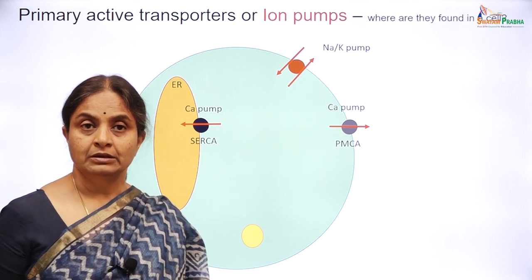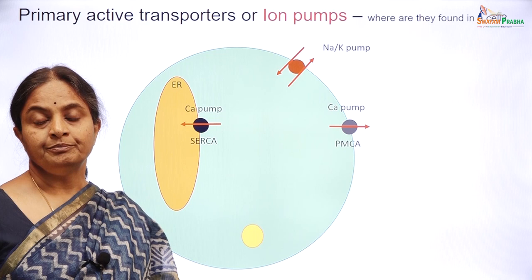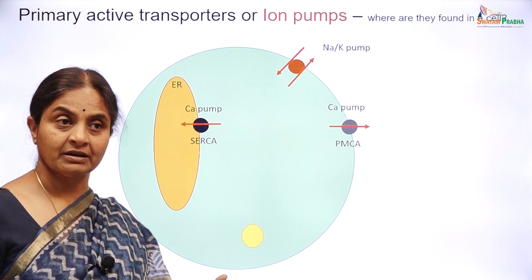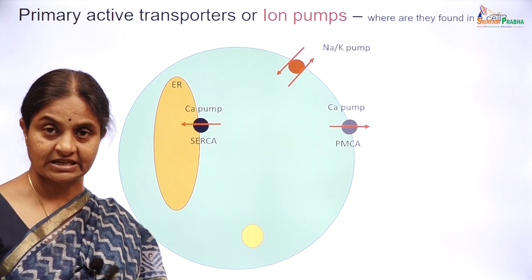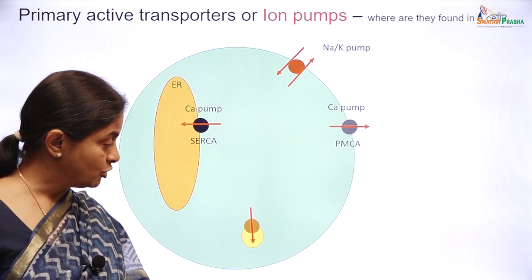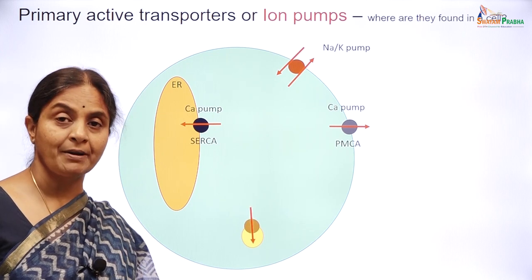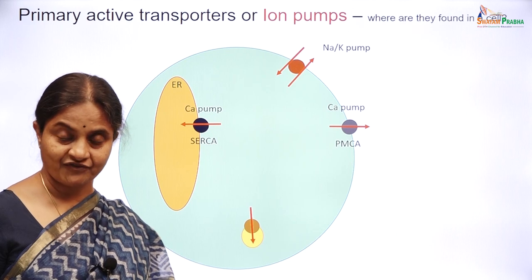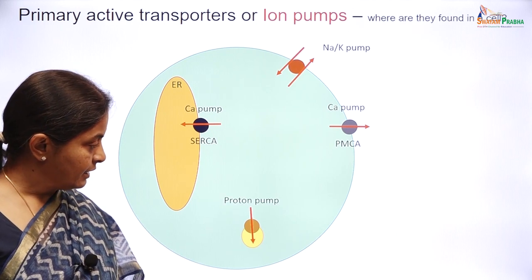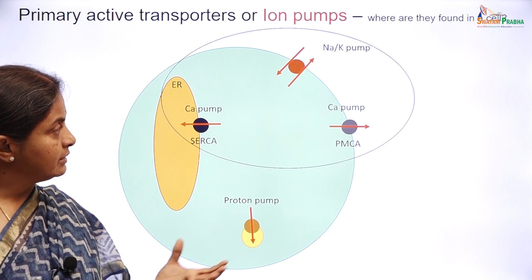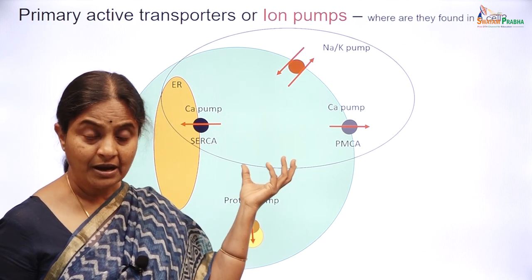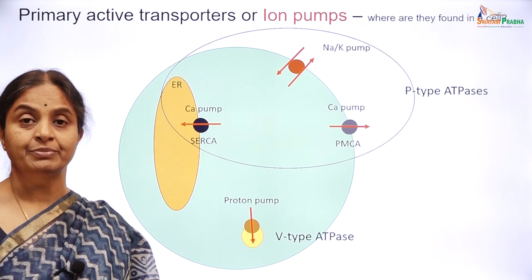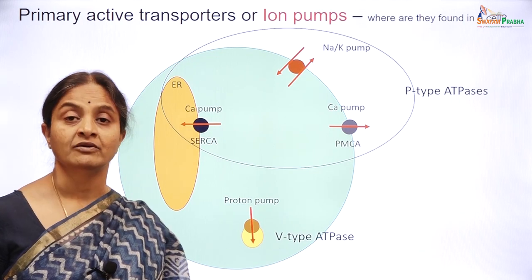There is another primary active transporter found on vesicular membranes — vesicles in a cell such as secretory vesicles and lysosomal vesicles. Many of these vesicles have a proton pump on their membrane, and acidification of the vesicle seems to be important for its functionality. While these three pumps are classified as P-type ATPases, this one is classified as a V-type ATPase, V probably standing for vesicular.